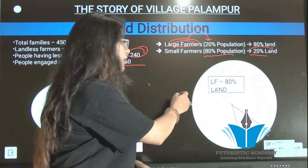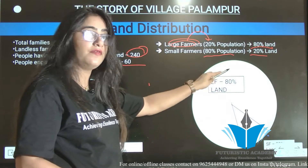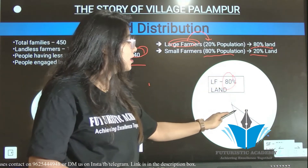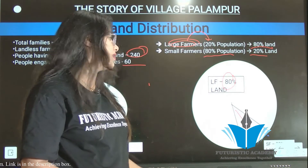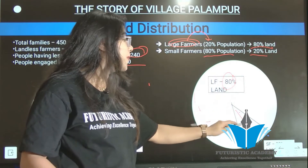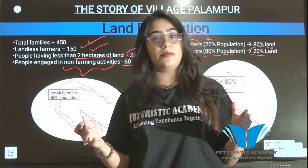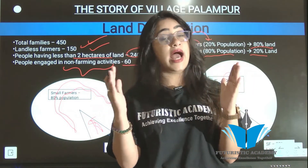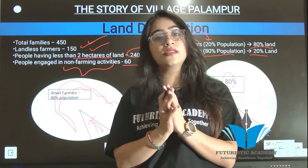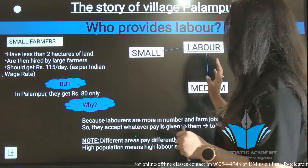Looking at the diagram: 80 percent of small farmers are living on only 20 percent of the land, while 20 percent of large farmers hold 80 percent of the land. This clearly shows that large farmers are fewer in population but control more land, and small farmers are more in number but have very little land.